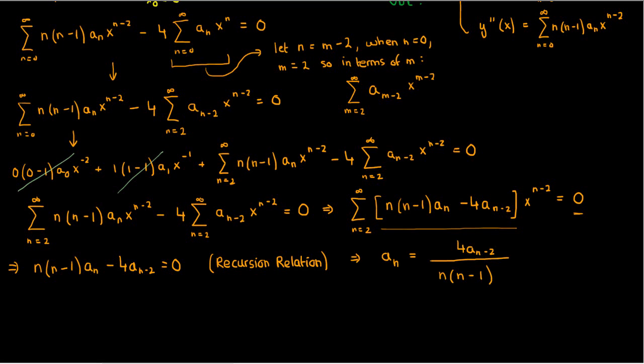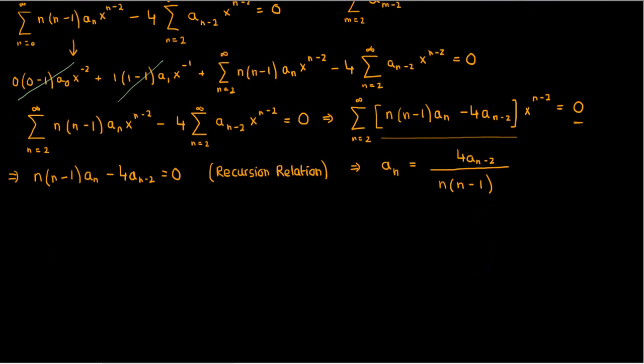From this formula it's clear that since the nth coefficient is related to the term two places back in the sequence, we have two solutions to this differential equation: one for odd n and another for even n. The even coefficients are related to previous even coefficients, and the odd coefficients are related to previous odd coefficients. So let's break this recursion relation into two branches — one for even n and one for odd n — and find a more explicit formula for the nth coefficient of the sequence.